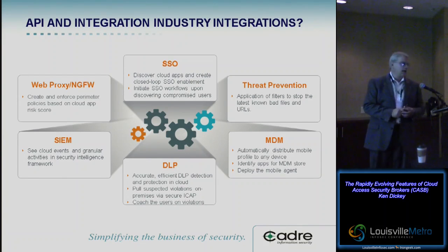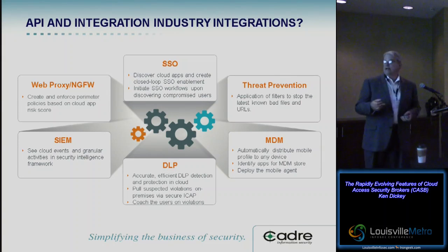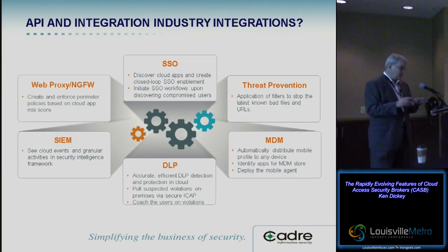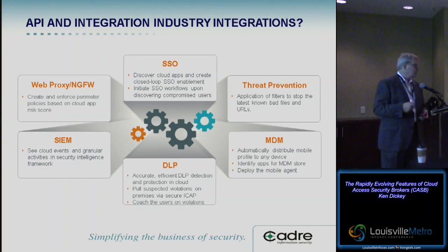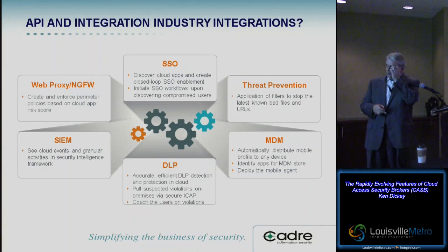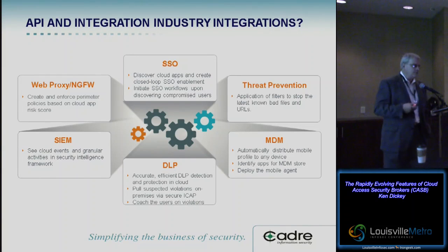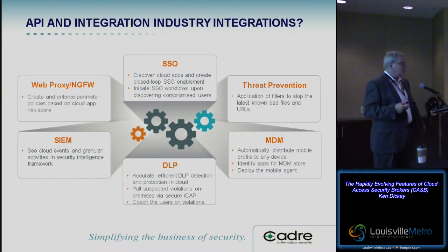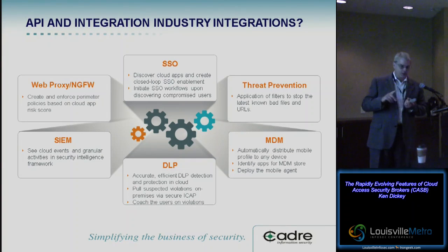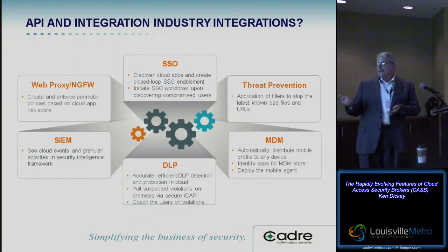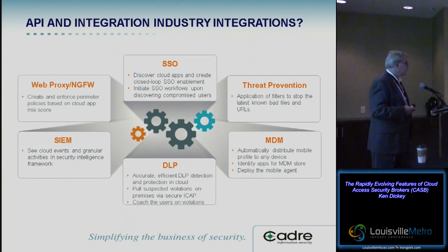You can pull suspected violations and send them via ICAP to your internal DLP solution for scanning and have them make the final call on whether it's a violation, then coach users. For threat prevention, use threat intelligence feeds — whether your own or the CASB provider's feeds from various sources — to block known malicious activity. And don't forget your mobile workforce. You have to be able to control what's going on with them: automatically deploying applications into the user store in MDM, distributing mobile profiles, and deploying a mobile agent. Many CASB providers don't have mobile agents — you should look for one that does.